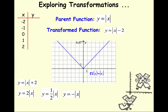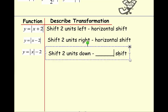Now let's look at what happens when we add and subtract outside the absolute value. For y equals the absolute value of x minus 2, we get the points: negative 2 comma 0, negative 1 comma negative 1, 0 comma negative 2, 1 comma negative 1, 2 comma 0. We still get the classic V shape, but it has shifted down two units. So subtracting outside the function gives a vertical shift downward.